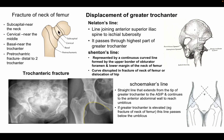Fracture of the neck of the femur can be classified as: subcapital (near the head), cervical (at the middle of the neck), basal (near the trochanter), and pertrochanteric (distal to the two trochanters). These are illustrated in the diagram showing subcapital, cervical, basal, and pertrochanteric fracture types.